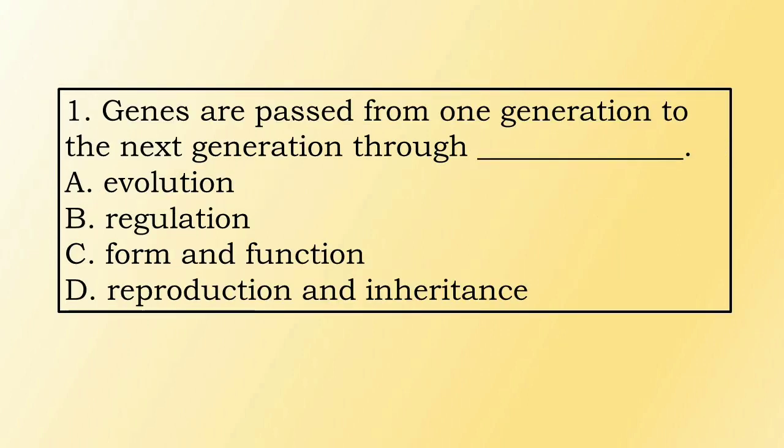Number 1. Genes are passed from one generation to the next generation through blank. A. Evolution. B. Regulation. C. Form and Function. D. Reproduction and Inheritance.